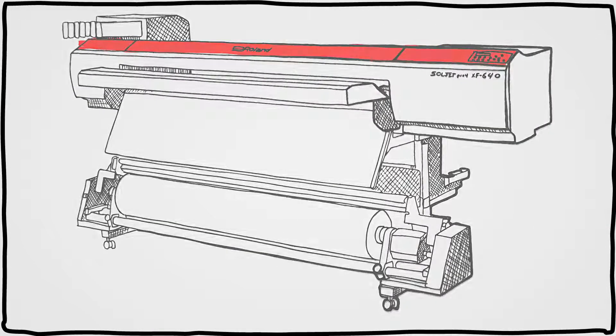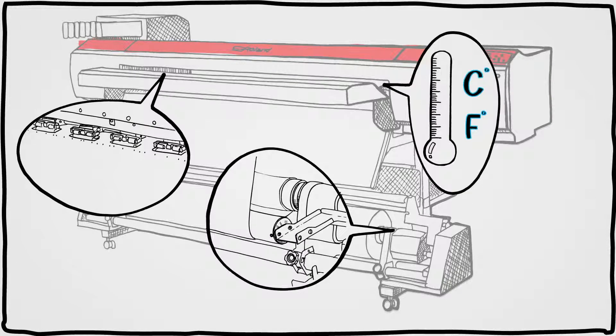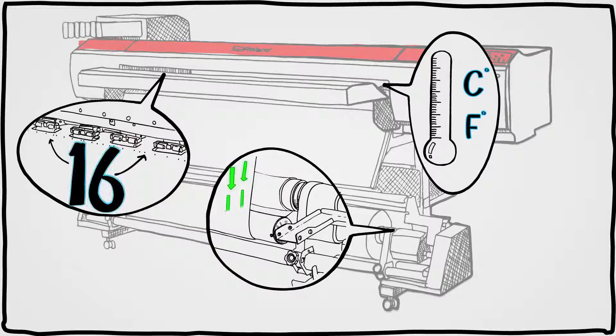Print speed doesn't matter, of course, unless the media can keep pace. Which is why the XF has a new media feed architecture with 16-pinch rollers, improved feed and take-up, and a redesigned heating system for high-speed drawing across the entire width of the print.